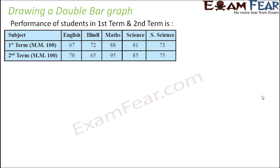Now let us try to draw a double bar graph. The concept remains the same — we will draw two bars for each item. Here the performance of students in first term and second term is given. You can draw one bar for the scores in different subjects for one term, and another bar for the other term, and that is how you get a double bar graph.